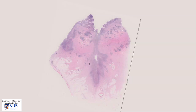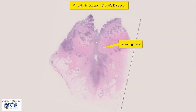Hello, this is a virtual microscopy slide taken from a case of Crohn's disease, and this is the right colon. We can see here very clearly that there is an extremely deep and narrow ulcer that penetrates very deeply into the wall of the colon.